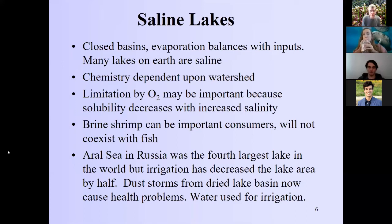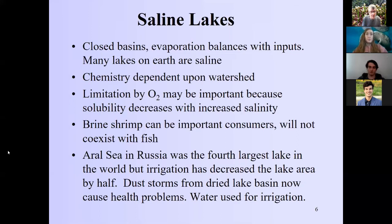Saline lakes are endangered because people are diverting the freshwater that feeds them before it gets in. The water comes in fresh but leaves salt behind as it evaporates. Irrigation has drastically decreased the Aral Sea, which was once the fourth largest lake in the world. Irrigation has decreased the lake area by half, and the resulting dust is toxic, making it a serious environmental problem.